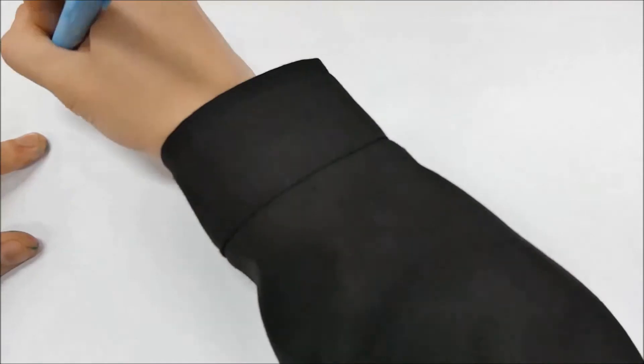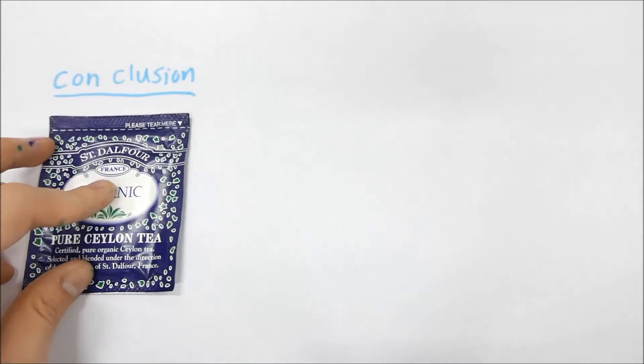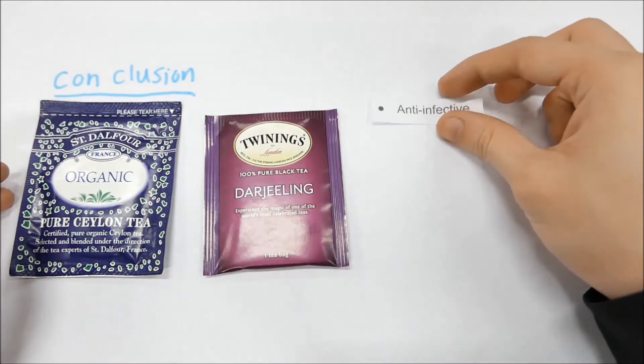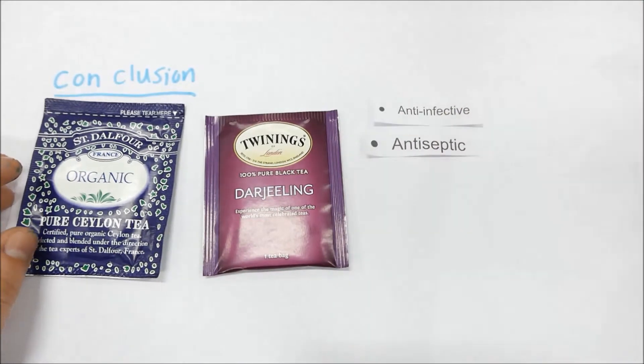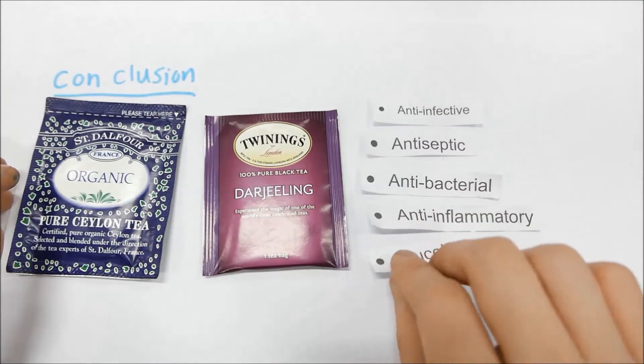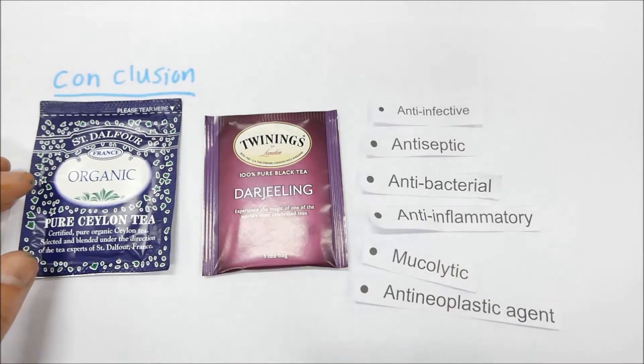In conclusion, based on the absolute area, ceylon tea and Darjeeling tea are found to have more compounds with health properties including anti-infective, anti-septic, anti-bacterial, anti-inflammatory, mucolytic, and anti-neoplastic agent.